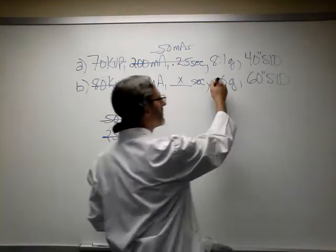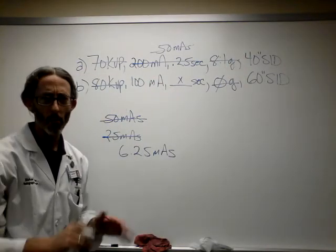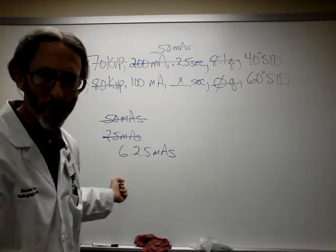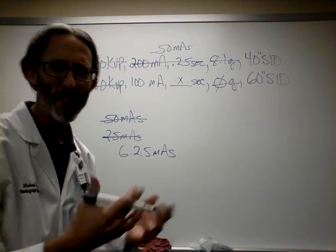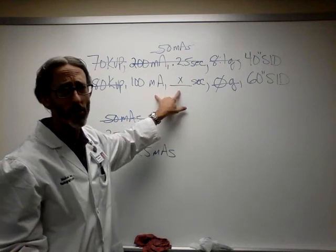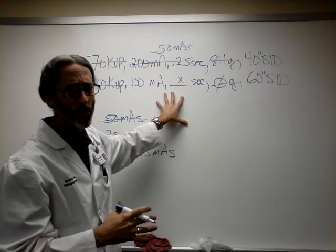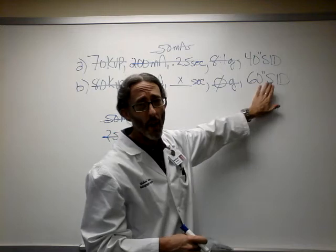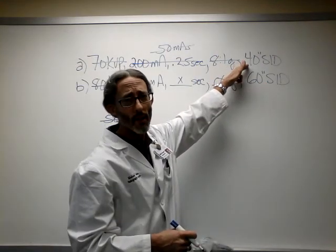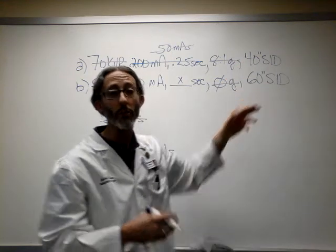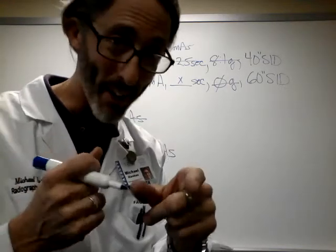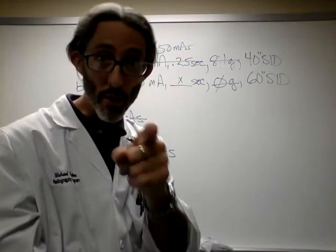We can cross out the grid portion of the problem. We're done. We've compensated for that. This is the new mass we're moving forward with, 6.25 mass. Isn't this awesome? There's not much else left here, right? We're going to leave this little section alone until the very end. Not much we can do with this right now. We've got to compensate for this distance change. We're going from a 40 inch SID to a 60 inch SID. So, our distance is increasing. This is a new mass law problem. That's what you were thinking, wasn't it? You're like a new mass law. It's true. New mass law problem.